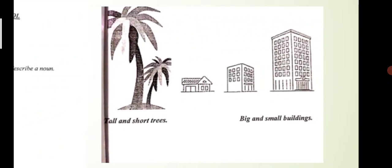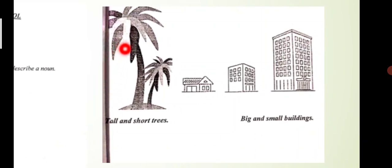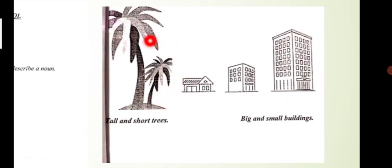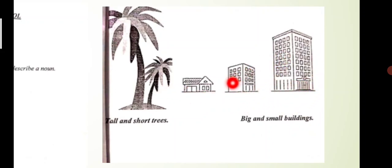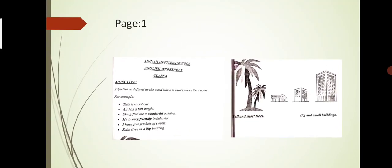As you can see: tall and short trees — 'big' is an adjective describing the tree, which is the noun. And 'short' is also an adjective. Big and small buildings: what is the noun? Buildings. And what are the adjectives? Big and small. So adjective describes the good quality or bad quality of a noun.